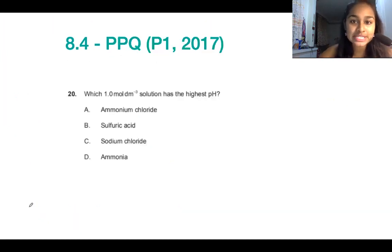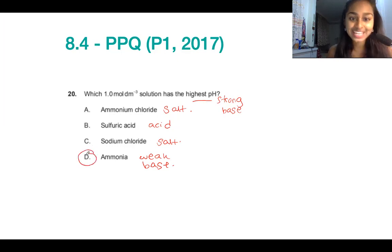Let's have a look at some past paper questions. I've taken this from paper one in 2017, and they're asking you which solution has the highest pH. A high pH means we're looking for a strong base. Let's look at these in turn. Ammonium chloride is a salt, so that's not going to be it. Sulfuric acid is an acid. Sodium chloride is also a salt. And ammonia is going to be a weak base. So even though we started off looking for a strong base, based on our four answers, the most appropriate answer for highest pH is actually ammonia, because that's going to be basic.